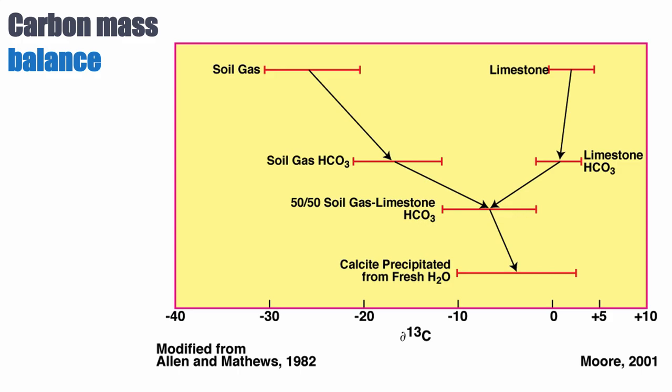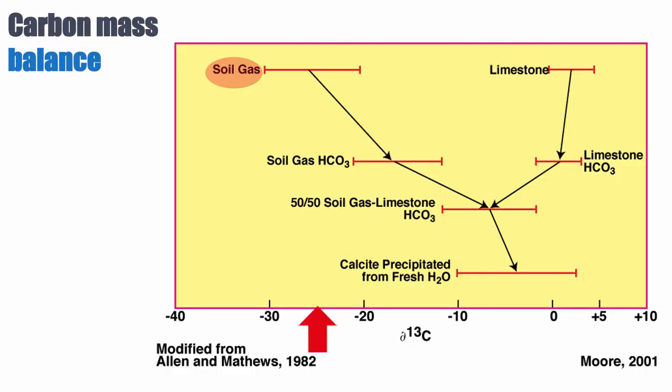Ultimately, the carbon isotope of a meteoric cement will be proportional to the carbon isotope composition of the CO2 dissolved in the meteoric water that precipitates it. There are essentially two sources of carbon for meteoric cement. One is soil gas — in the soil, organic matter dissolves and forms CO2 through bacterial processes or simple oxidation. This source is relatively negative because it comes from plants, which have a negative delta C13, so anywhere between minus 30 to minus 20 per mil.